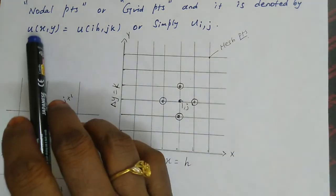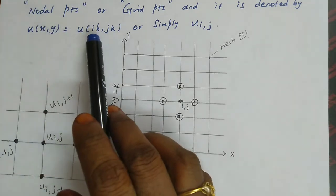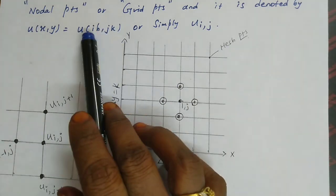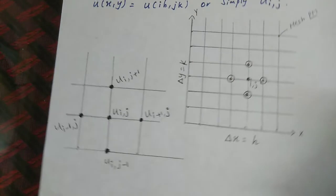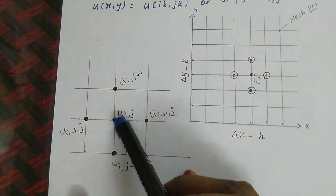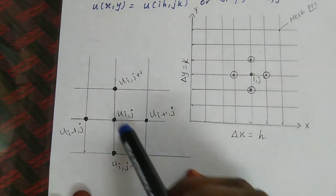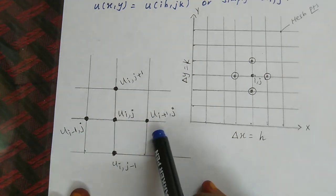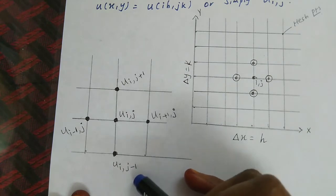Instead of writing coordinates explicitly, we denote any point as U(X, Y), where X variation is iH and Y variation is jK, or simply U(i, j). In this network region, if we take a point U(i, j), we consider its four neighboring points: left U(i−1, j), right U(i+1, j), above U(i, j+1), and below U(i, j−1).